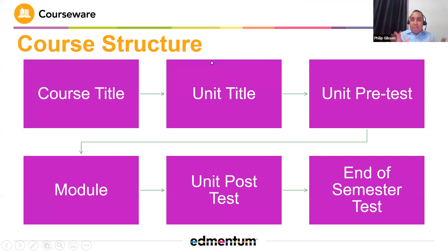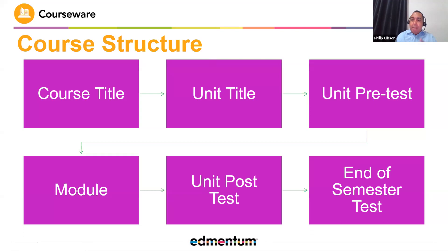The next couple of slides are just very high level — this is our basic course structure. I'm going to show you this when we get in. The course title, unit title, unit pre-test, module, post-test, and the semester-end test — you're able to govern and monitor the visibility of five of these. You can't really govern the course title because it is what it is, but all of the other five components you're able to manage in the curriculum, and you will see that when we get into the product momentarily.